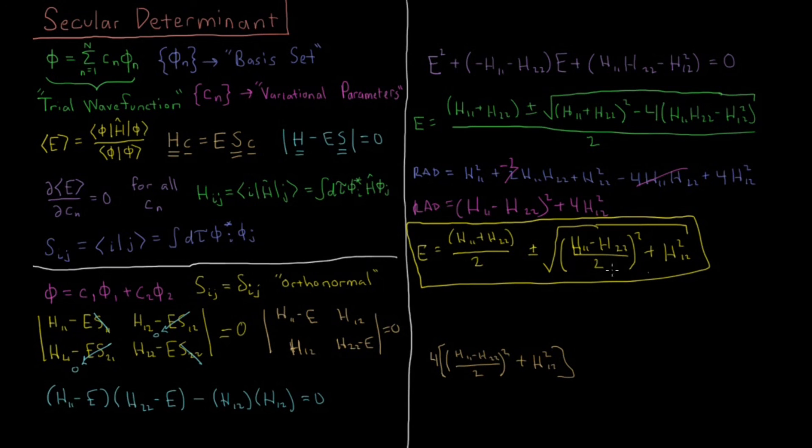This value in the radicand here is always going to be real. It's this sum of two things which are both real numbers squared, so that's always going to be positive, so this is always going to be real. So the minus term is going to give us the ground state energy E0, and the plus term is going to give us an excited state.